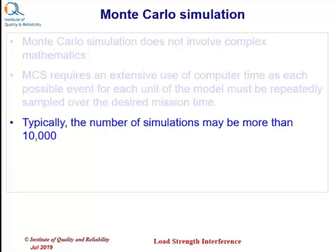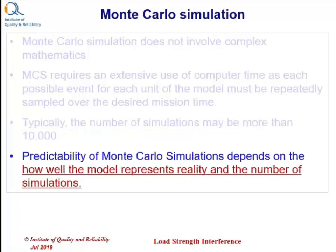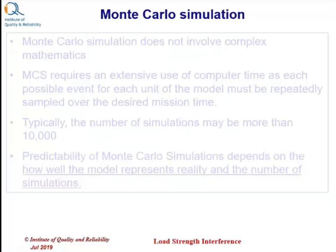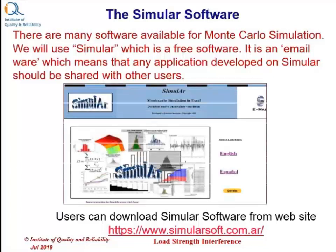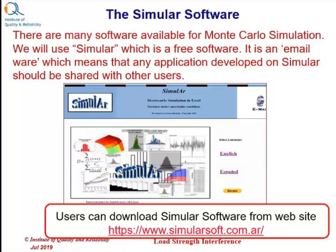Typically, the number of simulations may be more than 10,000. Predictability of Monte Carlo simulation depends on how well we have modeled the distribution and also the number of simulations. There are many software available for Monte Carlo simulation. We will use Simular software, which is a free emailware, meaning that any application developed on this software should be shared with other users on their website. Users can download Simular from the website as shown in the slide.